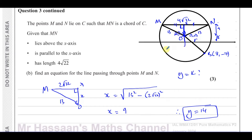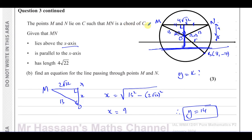The distance from the center downward would also be 9, but that would be 5 minus 9, giving us minus 4. So y equals minus 4 would also have a chord of the same length, but it would not be above the x-axis. So we use y equals 14 because that is 9 units above the center at y=5, giving 5 plus 9 equals 14. Y equals 14 is the chord line through M and N with length 4 root 22, parallel to and above the x-axis.